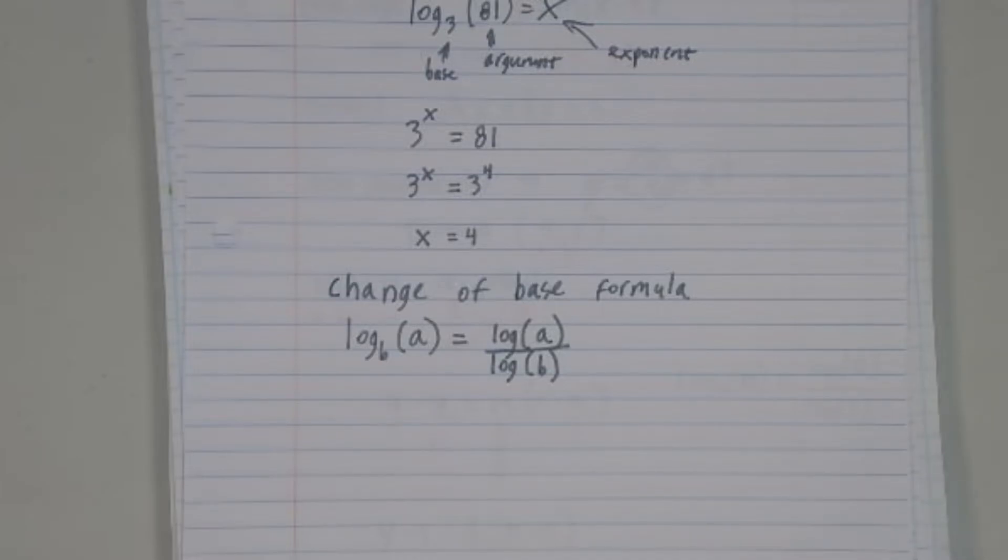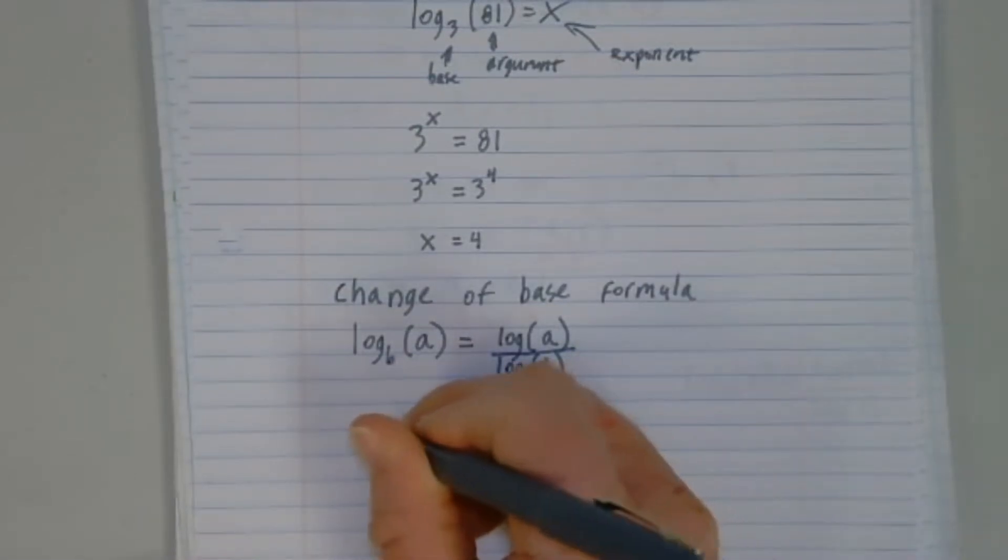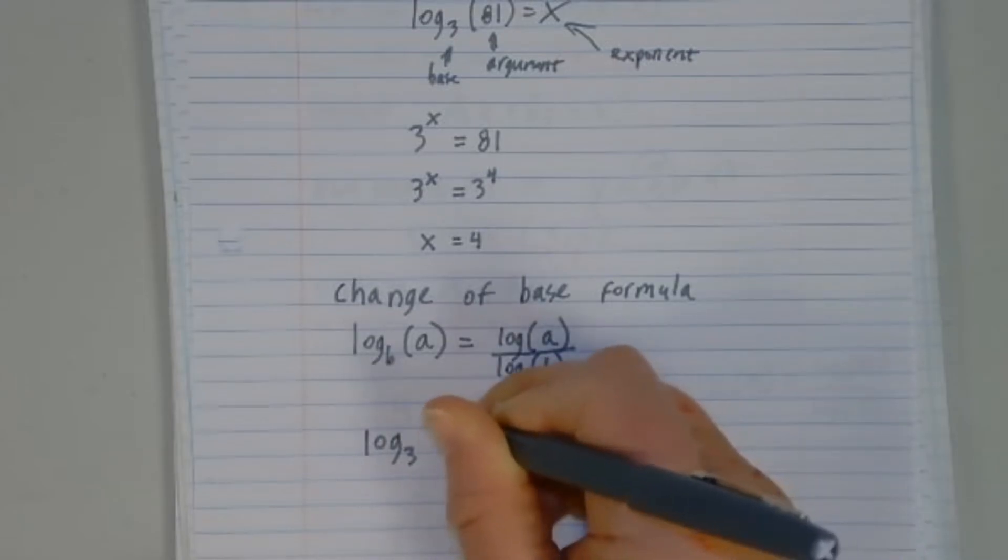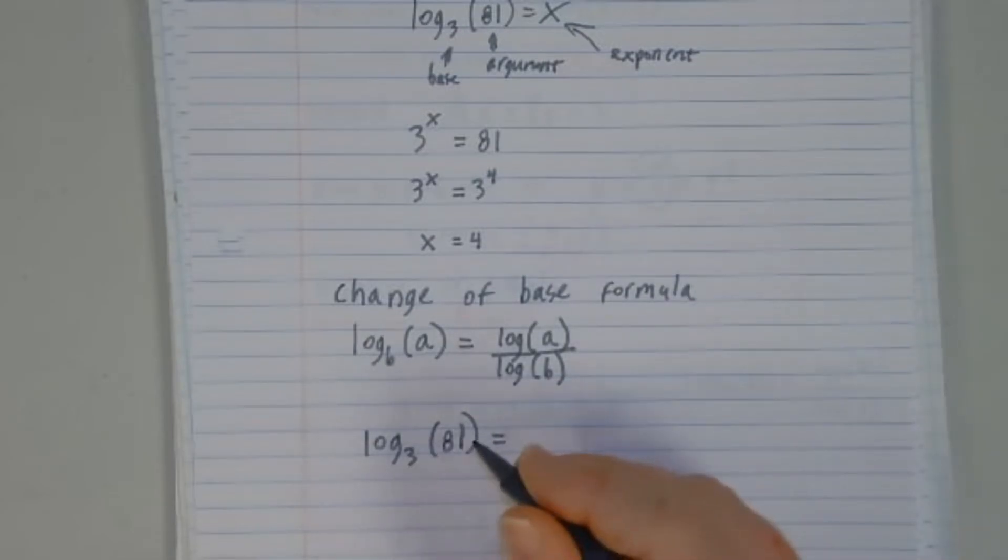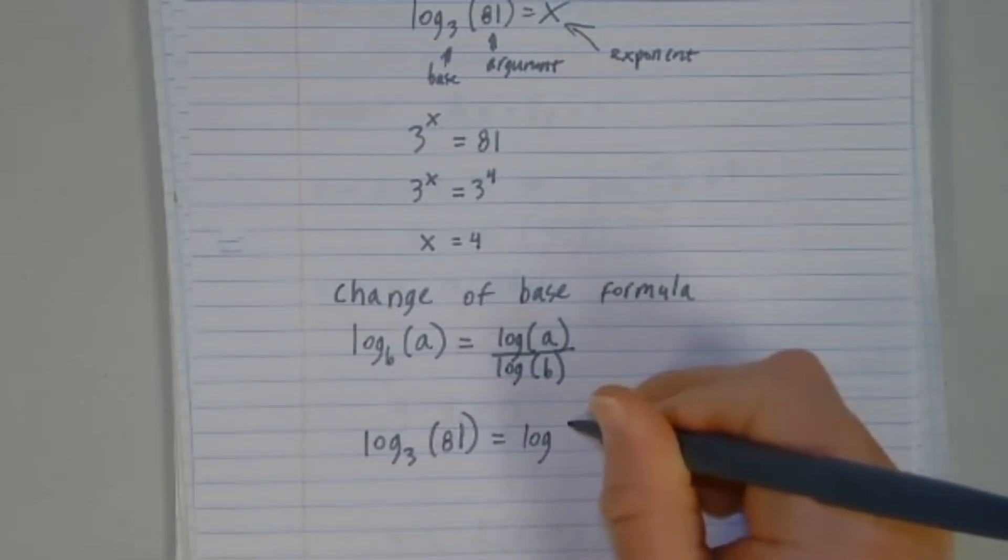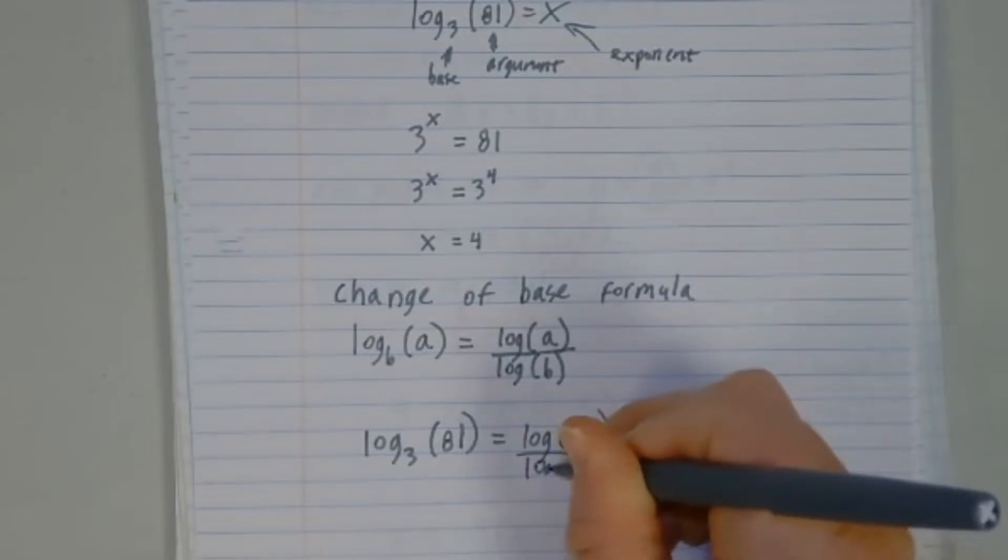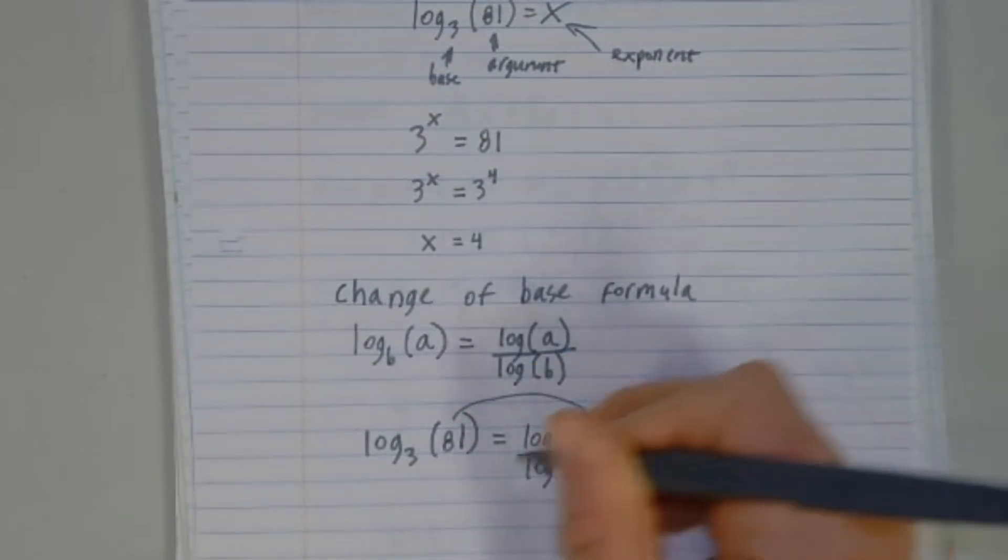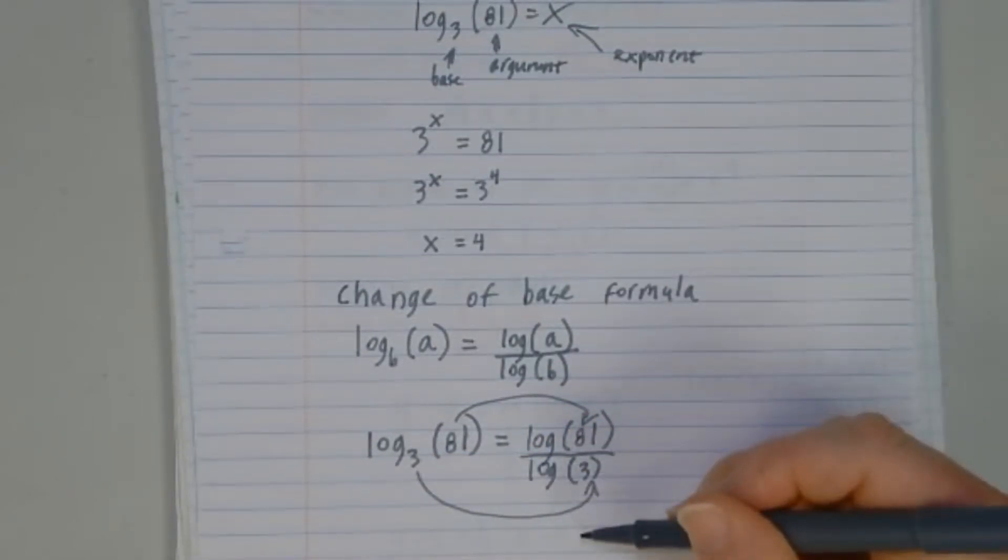So here is another calculator where I'd need to use change of base formula. So this one for change of base formula, since it is log base 3 of 81, that's the same as log base 10 of 81 over log base 10 of 3. This went here, this went here, and these are now logs with no particularly special base, just log base 10.